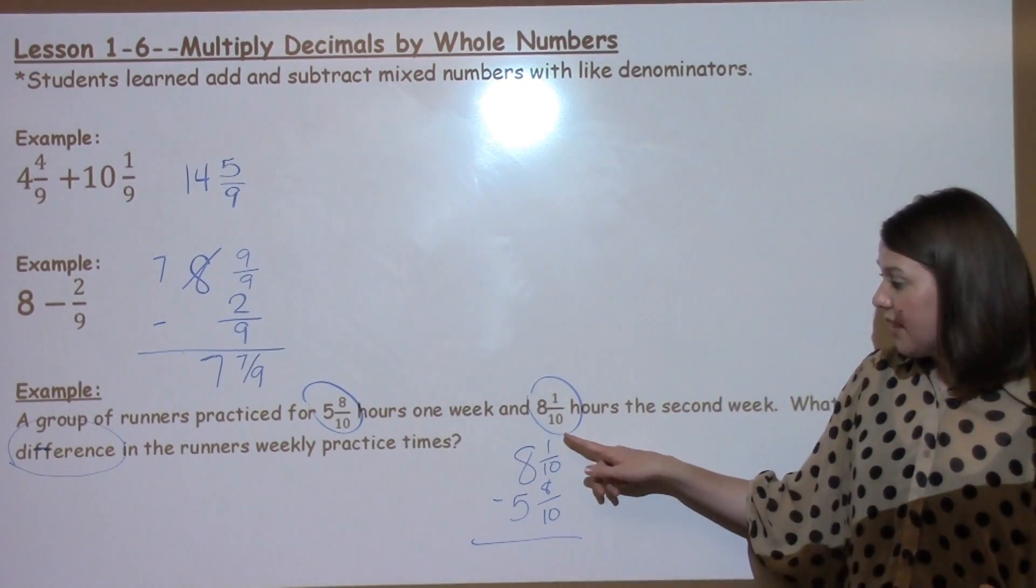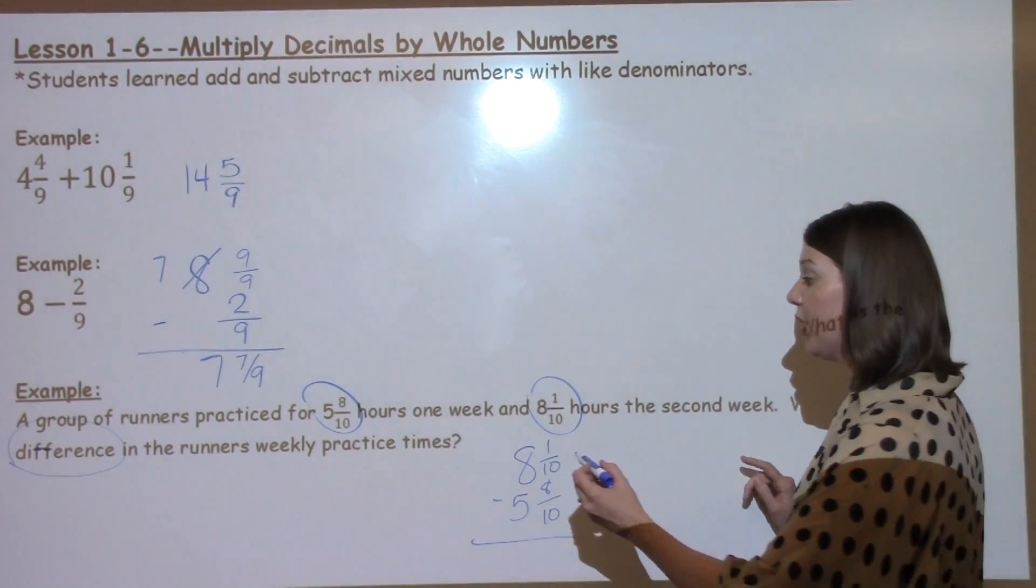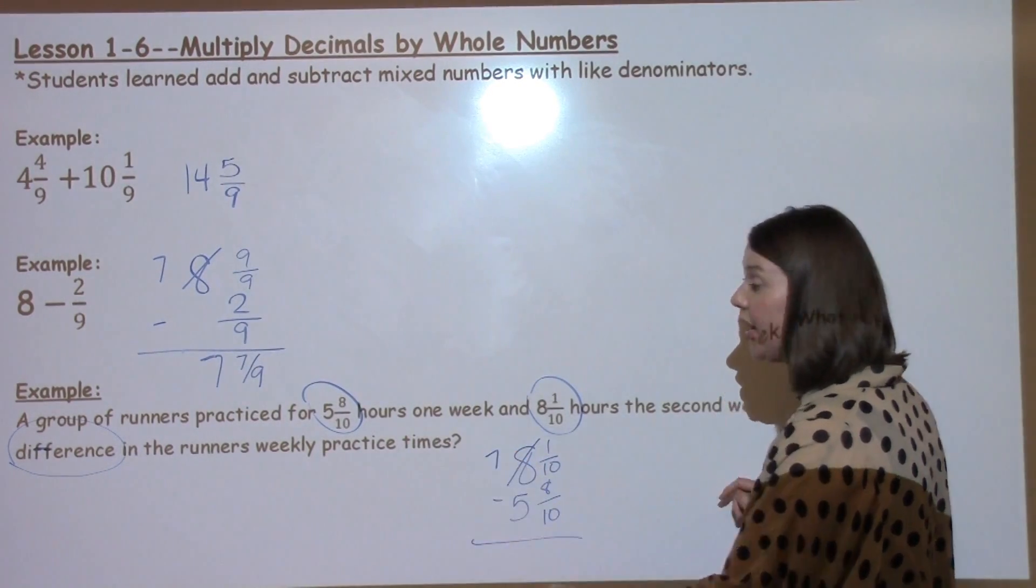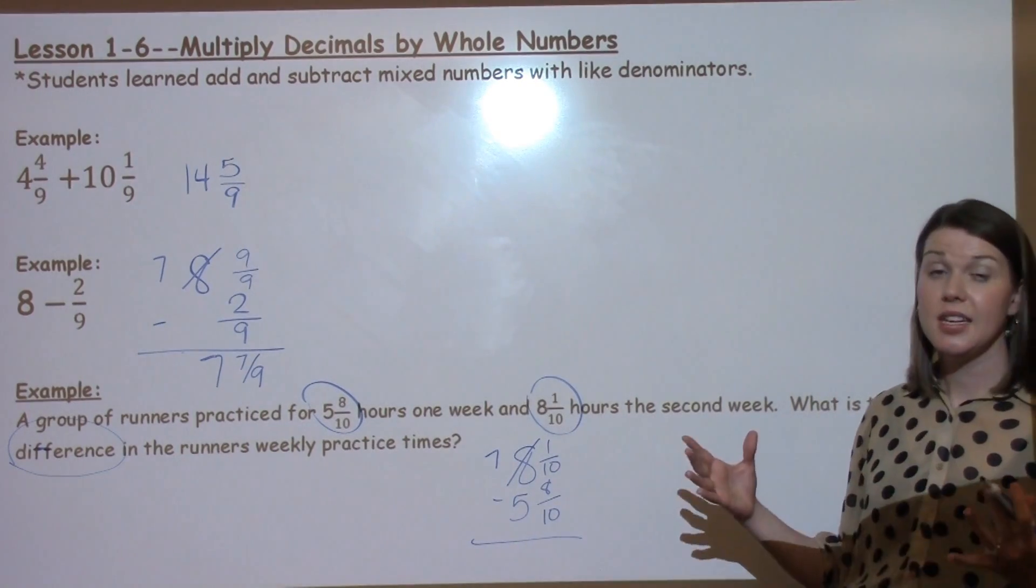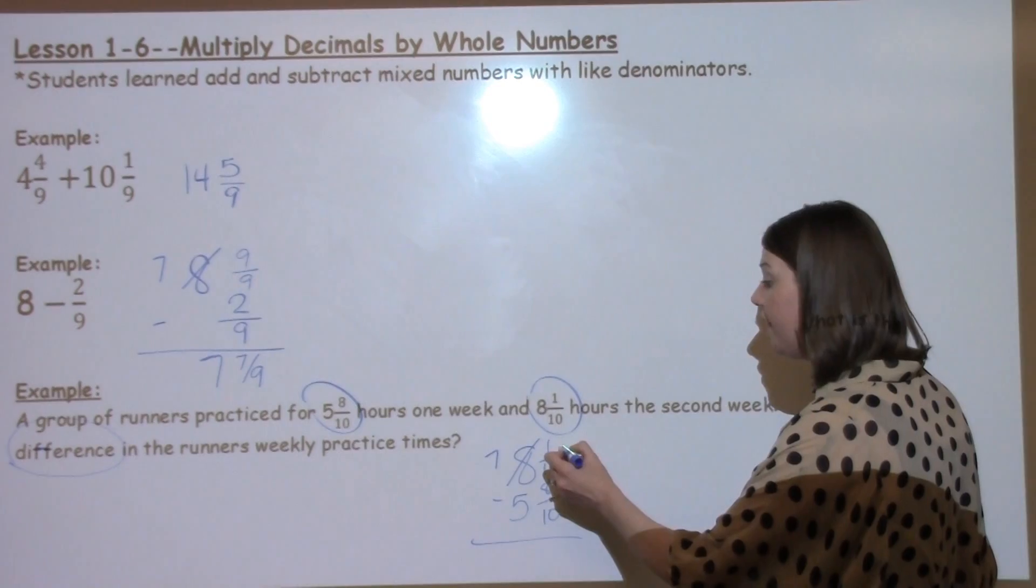The first thing I notice in the problem is I've got 1 tenths minus 8 tenths. I know I can't do that. So I'm going to go over to my whole number. And this is going to become a 7. I've taken away one whole, which is the same as 10 tenths. 10 tenths plus my 1 tenths gives me 11 tenths.